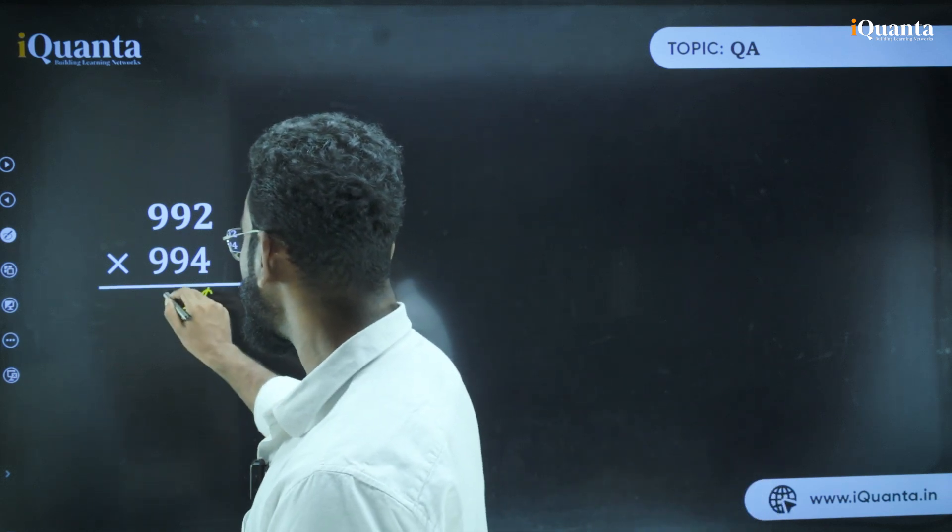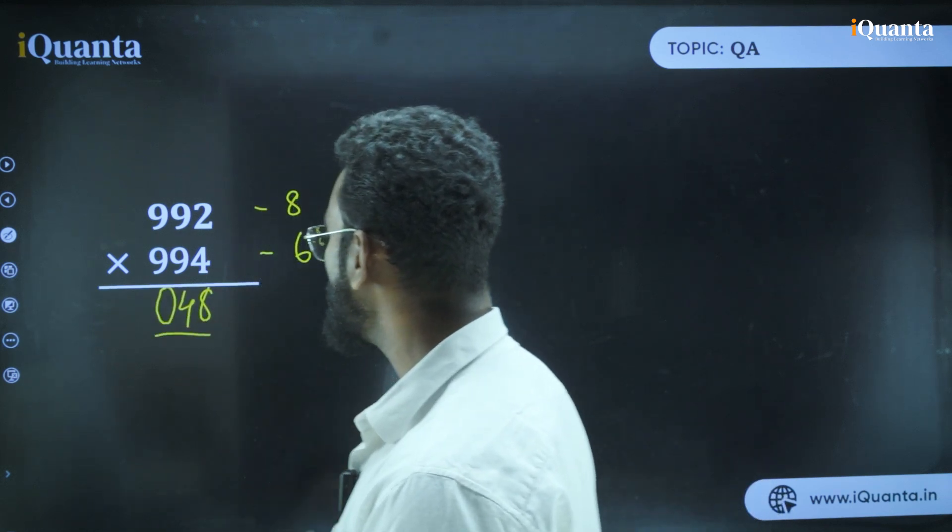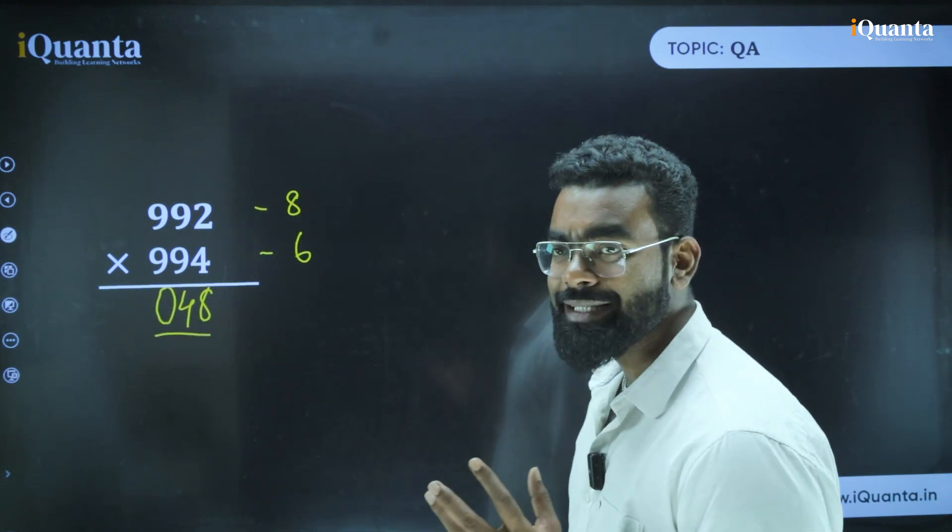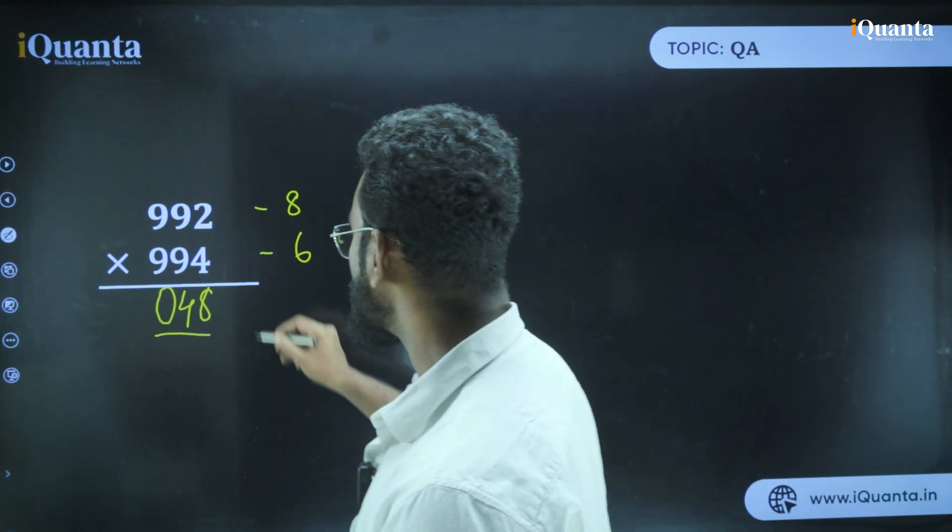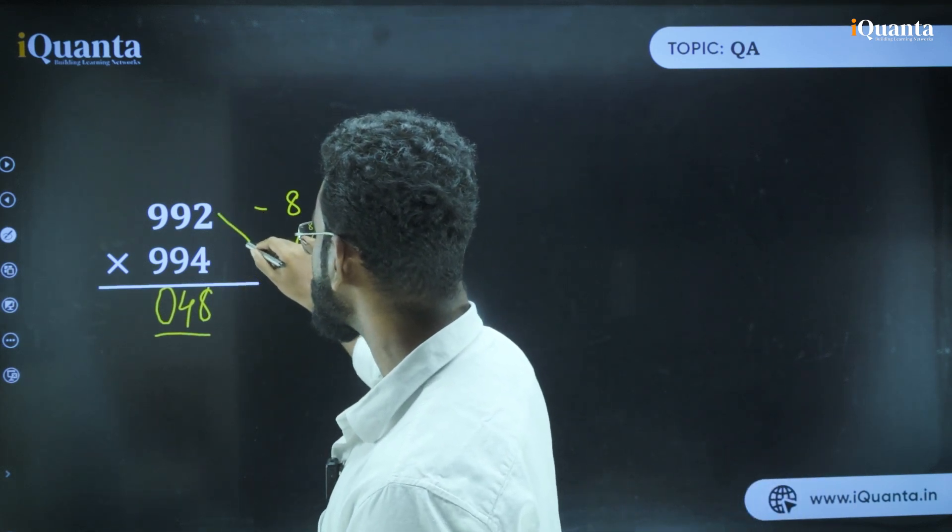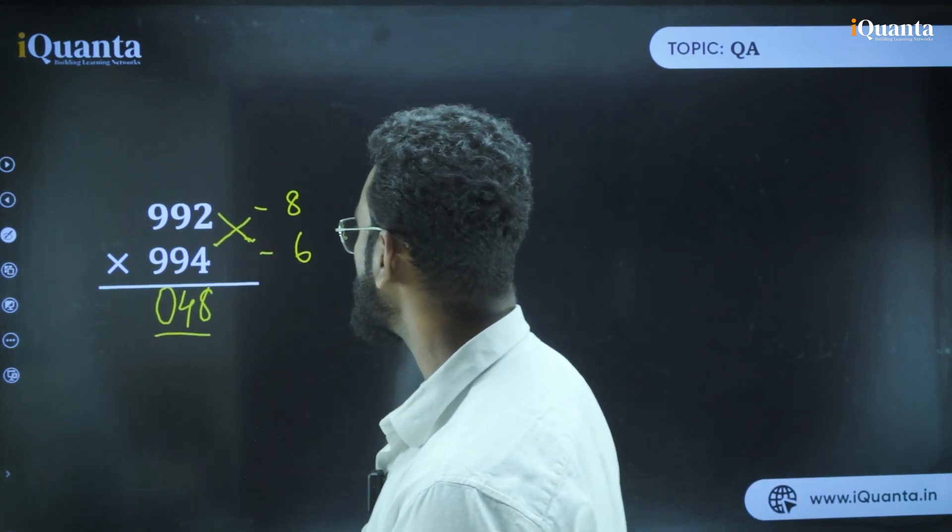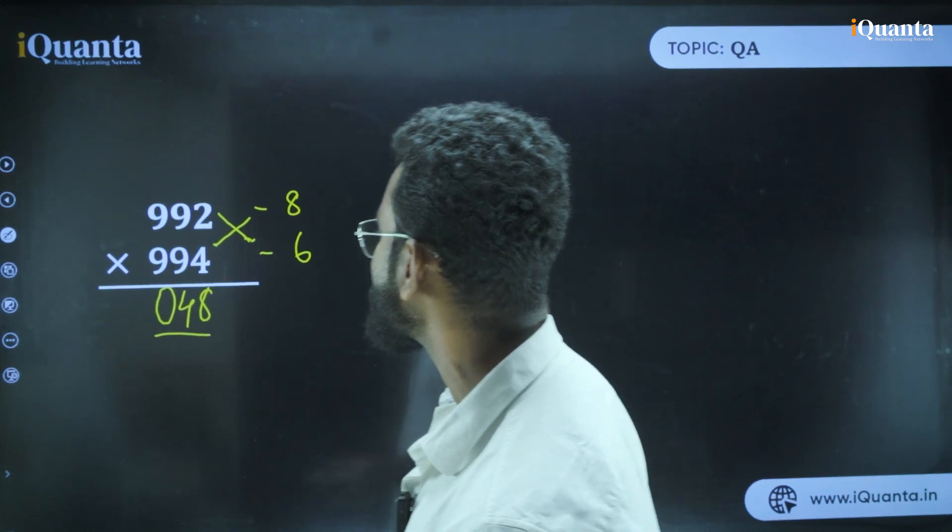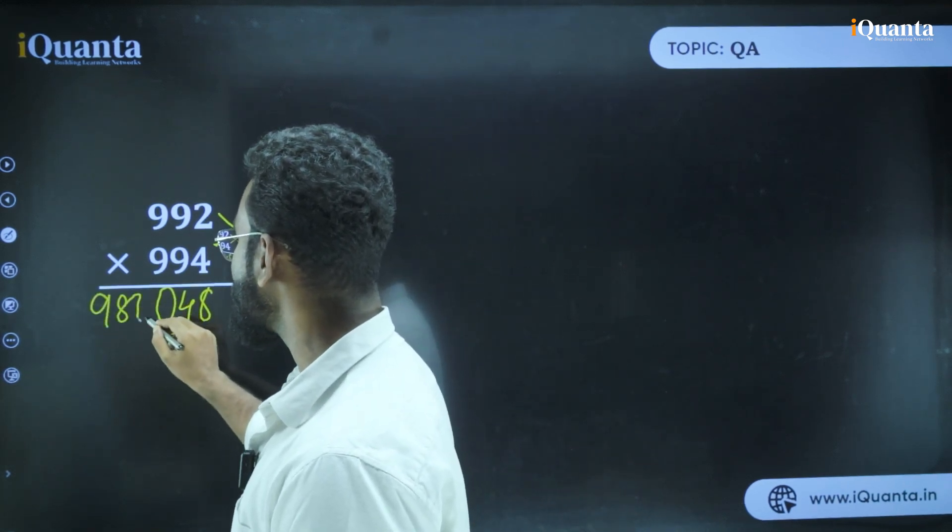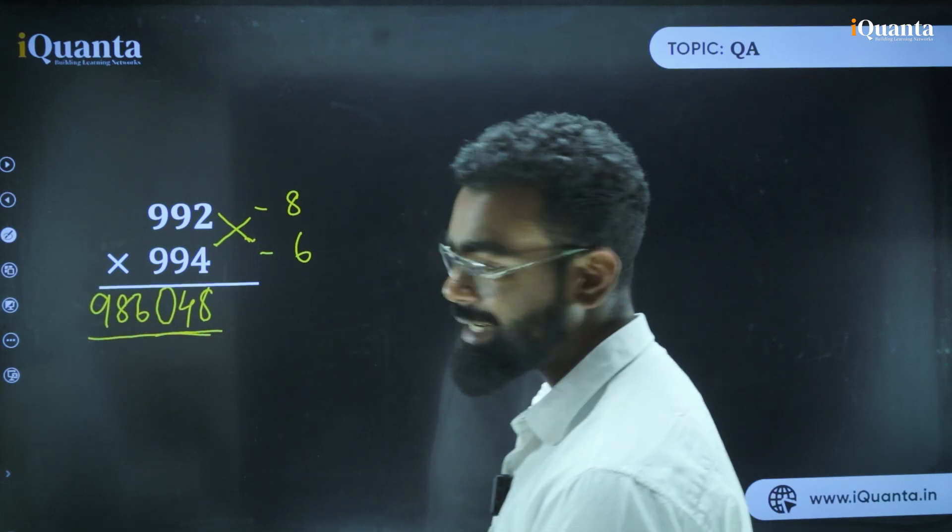If it is 48, so next step you have to add 0 here. So it's 048. Next is 992 minus 6, just do the same thing we have done. 992 minus 6 or 994 minus 8. Your answer is 986. Hence your answer is 986048.